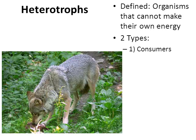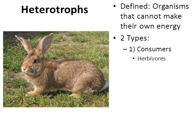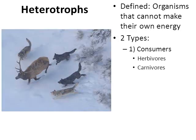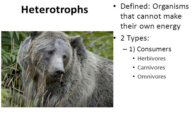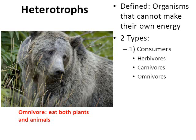Here's a wolf as a great example of a consumer. One of the more cute, adorable herbivores — rabbits — are a great example. They're called herbivores because they only eat plants. Another kind are carnivores. Here we have some wolves on a hunt, and carnivores like wolves only eat other animals. And then there are organisms that will eat plants or animals — these are called omnivores. Bears are a great example.